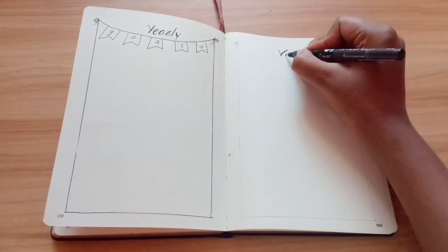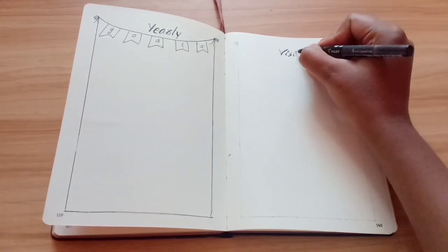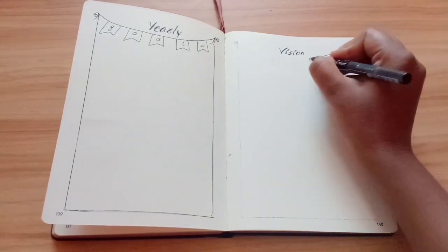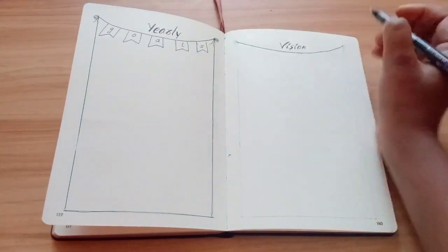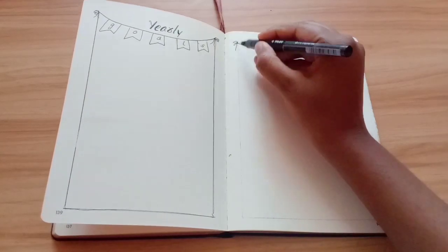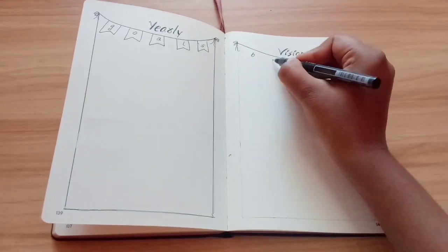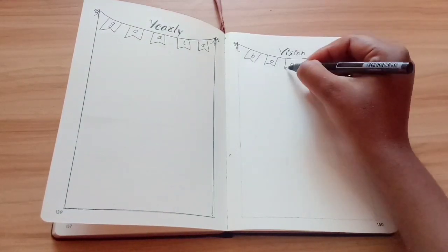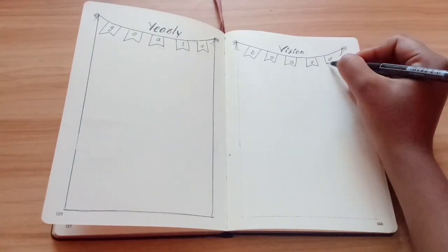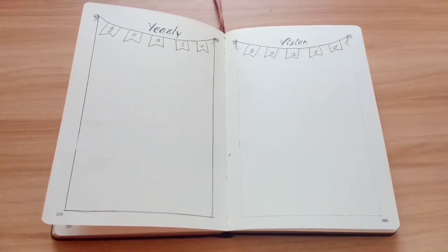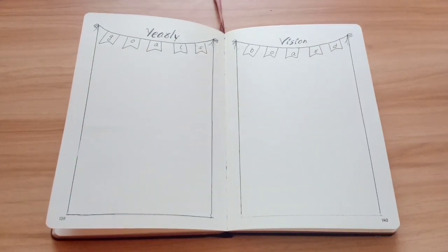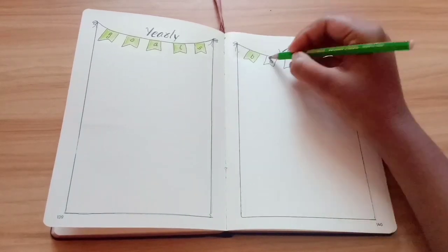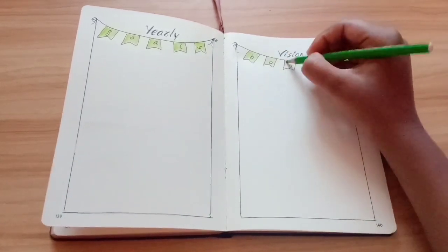On the right side, I have made place for my vision board. This turned out to be quite small, but it's fine. Even for vision board, I am using the same design as the goals and then coloring it too.